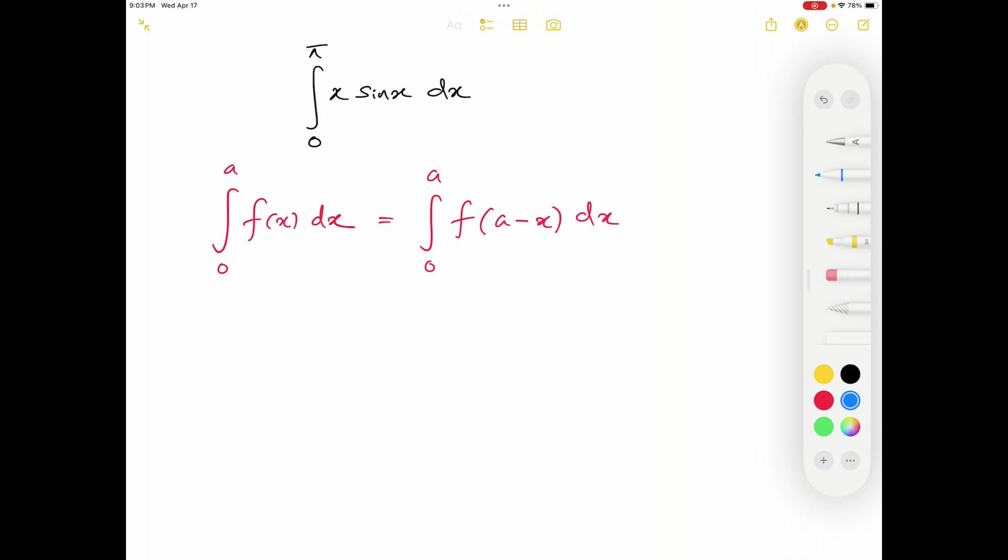So let's see that theorem one more time. If I have to integrate a function from 0 to a, it will also be equal to integral 0 to a, that same function, but this x will be replaced by a minus x. Today I'm not going to discuss the proof of this theorem because during our last video we discussed the complete proof. So today I'm going to directly apply this theorem and solve this given problem.